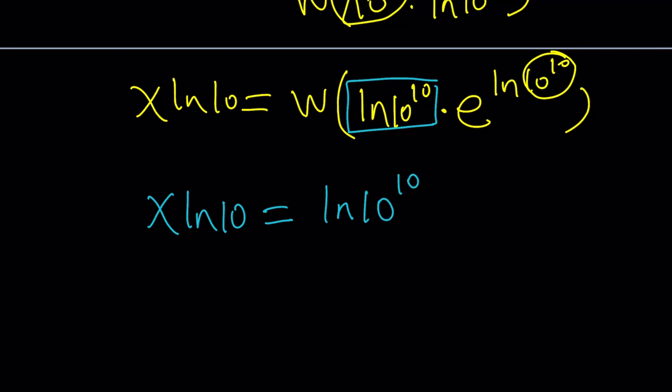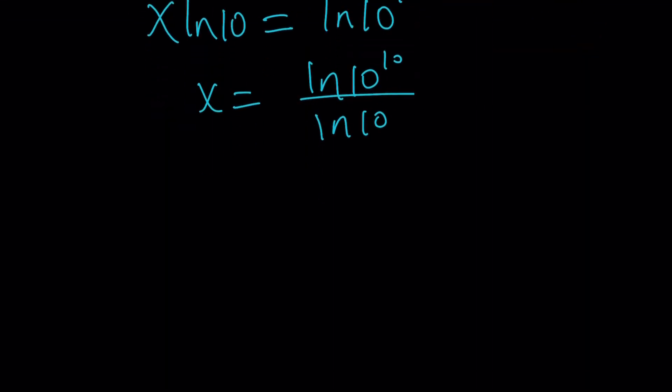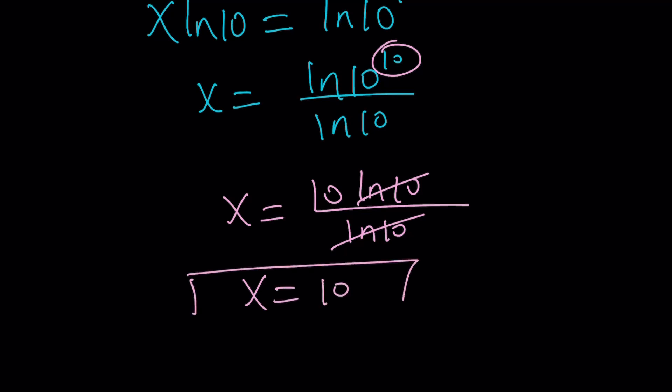But again, how do you solve this problem? You can divide both sides by ln 10. But how do you simplify this? Good question. I would say properties of logarithms, right? And how do you use that? You can go in and bring this to the front 10 ln 10 divided by ln 10, cross out the 10s, ln 10s, and you'll get x equals 10.